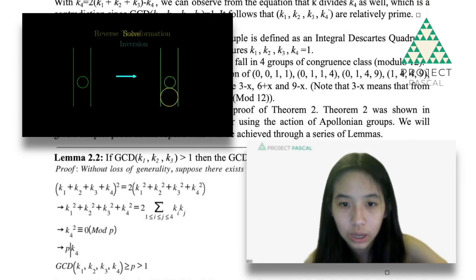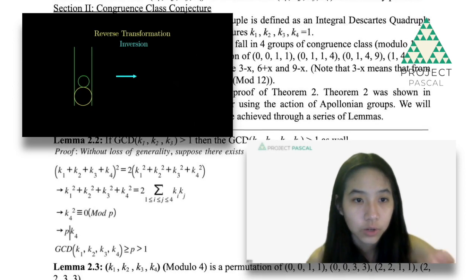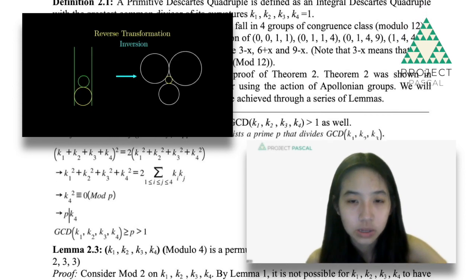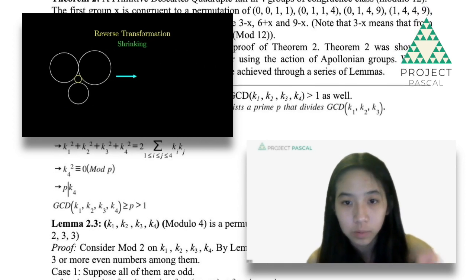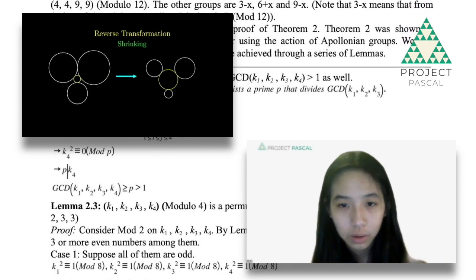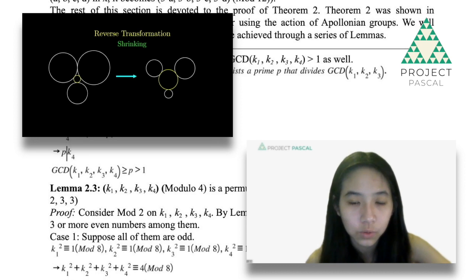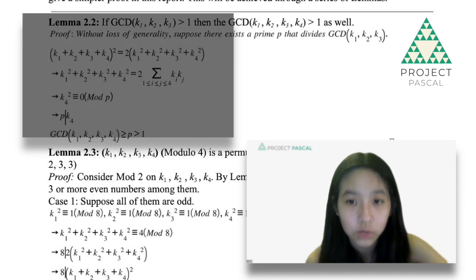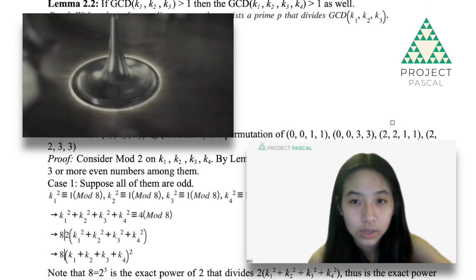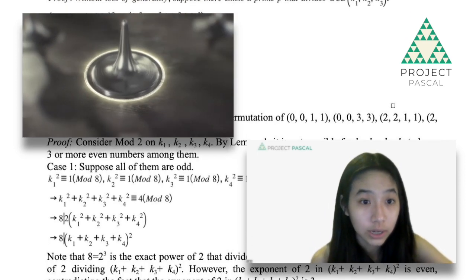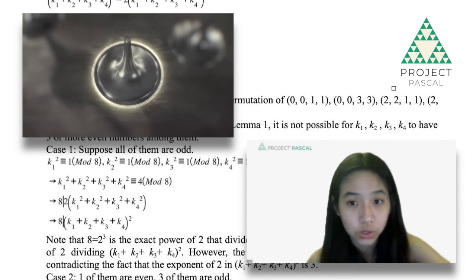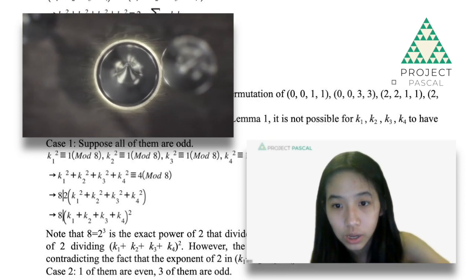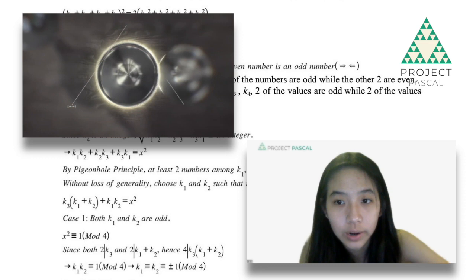So the equation that I'll be exploring, which is the Descartes theorem, is of the form: (K1 + K2 + K3 + K4)² equals 2 times (K1² + K2² + K3² + K4²). And as you can see, that's kind of like a Diophantine equation. And if you look at only integer solutions, it is a Diophantine equation that is intended to further explore.